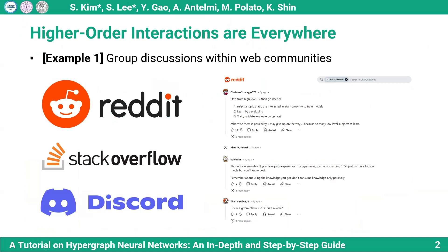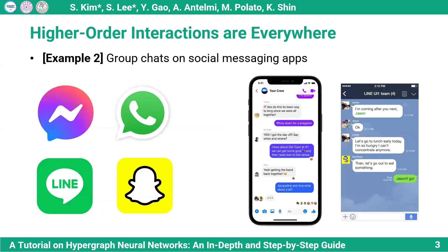Higher-order interactions are everywhere. A higher-order interaction indicates an interaction involving a group of entities. An example is group discussions within web communities where people share their thoughts with the group members simultaneously. A group chat on social messaging apps is another example.